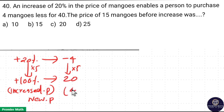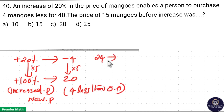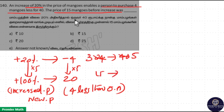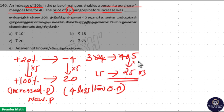This 20 must be 4 less than the original amount, so the original amount must be 20 plus 4 = 24 mangoes. So 24 mangoes initially cost ₹40. That means 3 mangoes cost ₹5 initially. Then 15 mangoes cost 5 into 5 = ₹25 initially. So option D, ₹25, is your answer.